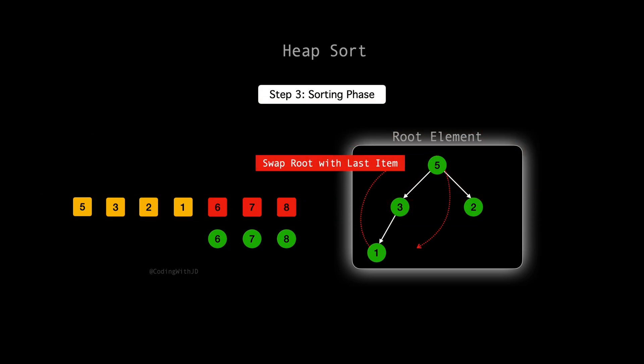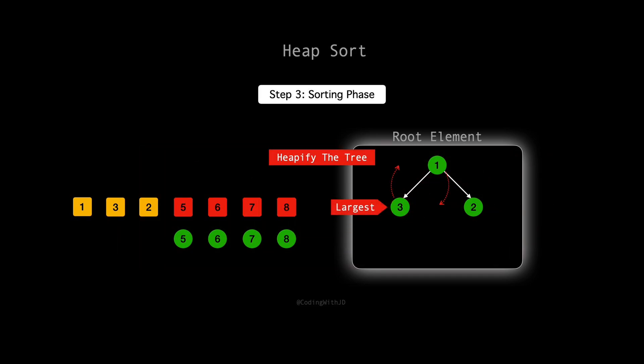In the next step, we will swap the root 5 with the last element 1, placing 5 in its correct position in the sorted array, and then re-heapifying the remaining elements 1, 3, 2. We now have our smaller heap 1, 3, 2, and need to restore the max heap property starting from the root. The root element 1 is the smallest, with children 3 and 2. To maintain the max heap property, we need to swap 1 with the largest of its children. Between 3 and 2, 3 is the larger element. We'll swap 1 with 3 to bring the larger element to the root, ensuring the heap's structural integrity.